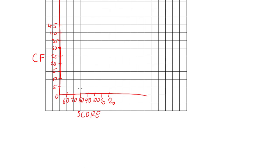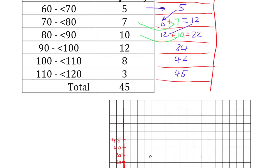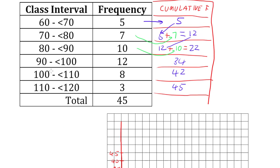Now we can graph our data on here. The only thing is we've got two numbers to pick between for our x axis. Do I map this 5 to 60 or 70, the 12 to 70 or 80?